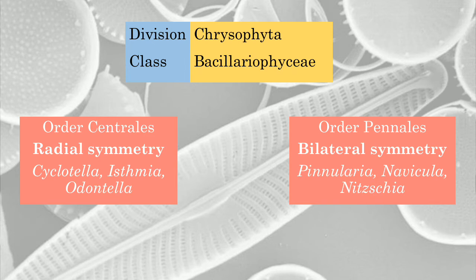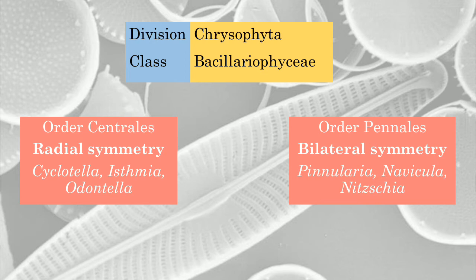Organisms under the Centrales order include Odontella, Cyclotella, and Isthmia, and these are usually marine in nature. The other kind of diatoms — those with bilateral symmetry — include Navicula, Nitzschia, and Pinnularia, and these are mainly freshwater in distribution. So radial symmetry diatoms are found in marine water, while bilateral symmetry diatoms usually populate freshwater bodies.